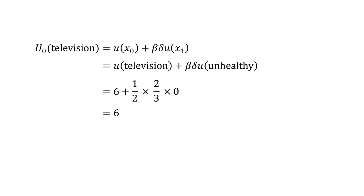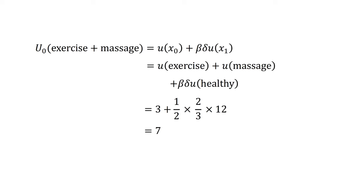What if Beth loved massages and remembers she has a massage voucher she has been saving? If she decides that exercising today means she'll go for a massage straight after, with utility of massage equal to 3, the discounted utility of exercise plus massage equals utility of exercise plus utility of massage plus beta*delta times utility of being healthy equals 0 plus 3 plus 0.5 times two-thirds times 12, which equals 7. Now 7 is greater than 6, so Beth chooses to exercise. This example is not strictly a commitment device as Beth could cheat — she could watch television and get the massage — but people are often good at creating mental accounts by which they make certain activities out of bounds unless certain conditions are met.